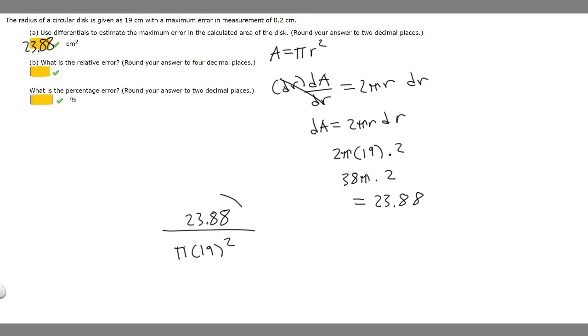23.88 divided by π times 19² equals 0.0215 and so on. We're supposed to round to four decimal places. Since the next digit is 5, we round up to 0.0211. That's the relative error.